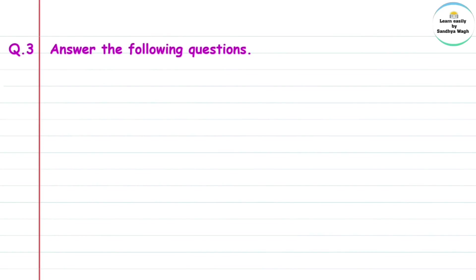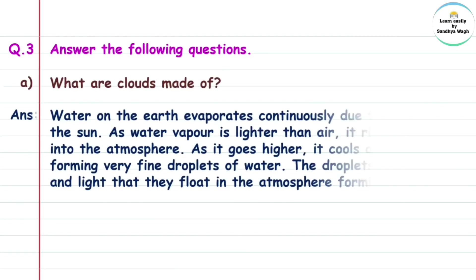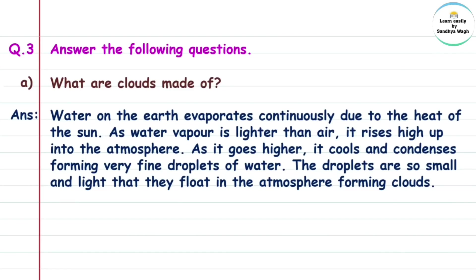Question 3, Answer the following questions. A: What are clouds made of? Answer: Water on the earth evaporates continuously due to the heat of the sun. As water vapor is lighter than air, it rises high up into the atmosphere. The water vapor then forms very fine droplets of water.